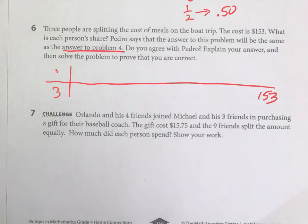And then here we have four friends and his three friends purchasing a gift for their baseball coach. And we've got $15.75 split amongst nine friends. So this is a challenge, so just do your best. If you get really stuck here, I think it's okay to leave it undone if you've given it a try.